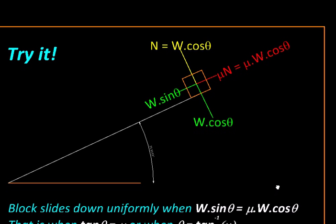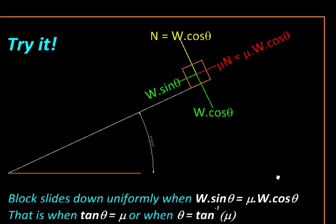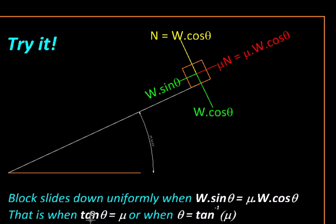And W will cancel, so this is true for blocks of all weights. And then we get tan θ, the inclination of the plane, is equal to μ, the coefficient of friction. So this gives us an angle of inclination at which the block will start sliding. It is tan inverse of the coefficient of friction. This angle is also called as the angle of friction.